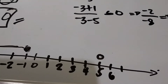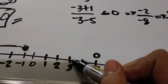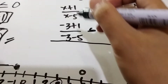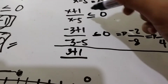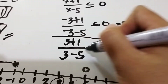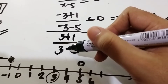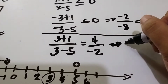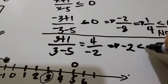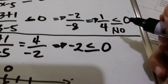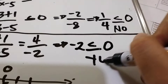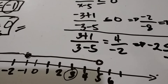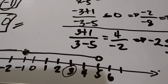Let's try a point from the middle part — positive 3. Substituting x equals 3: we get 3 plus 1 over 3 minus 5, which is 4 over negative 2, equal to negative 2. The inequality asks: is negative 2 less than or equal to 0? That is yes. So the values from negative 1 to positive 5 are part of the possible value of x.